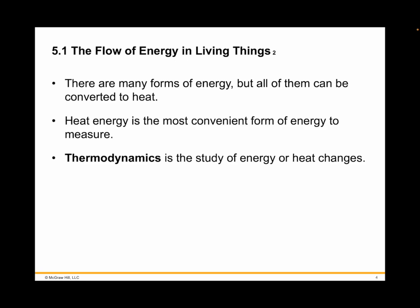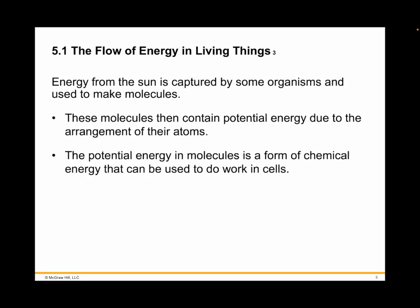Energy flows in the biological world from the sun, which shines a constant beam of light on Earth. It's estimated the sun provides Earth with about 40 billion calories per second. Plants, algae, and certain kinds of bacteria capture a fraction of this energy through photosynthesis. In photosynthesis, energy is garnered from sunlight and used to combine small molecules — water and carbon dioxide — into more complex sugar molecules, which have potential energy due to the arrangement of their atoms. This chemical potential energy will eventually be used by the cell to do work.